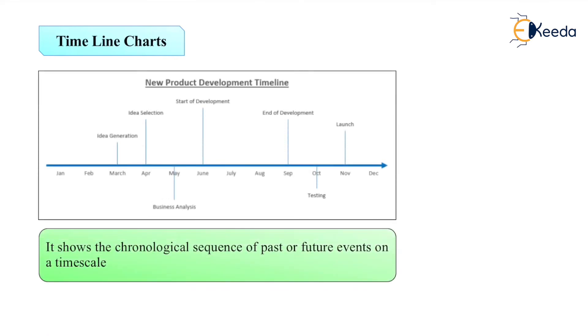Next is timeline chart. Through that we can explain different timelines. This is a timeline chart. It shows the chronological sequence of past or future events on the timeline. We can say business analysis we can complete in the month of May. In the month of June, start development. Then end of the development we can do in September. This is called a timeline chart.